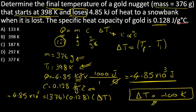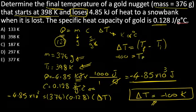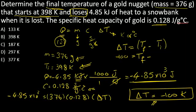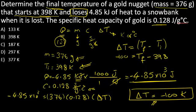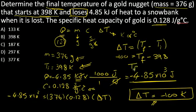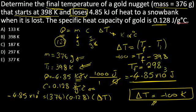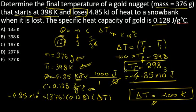So -100 = T final - 398. If I move this to the other side as positive, that gives me T final = 298.